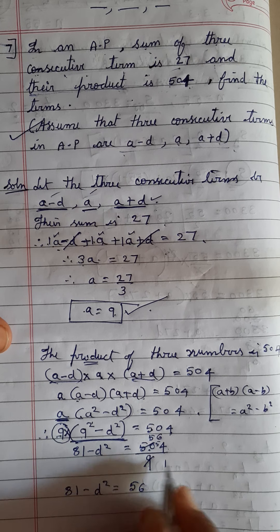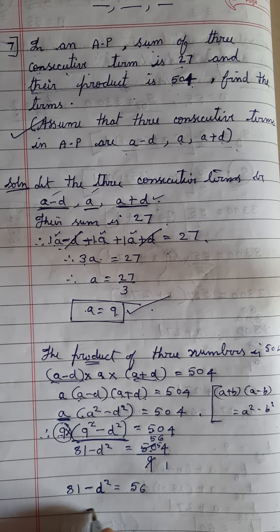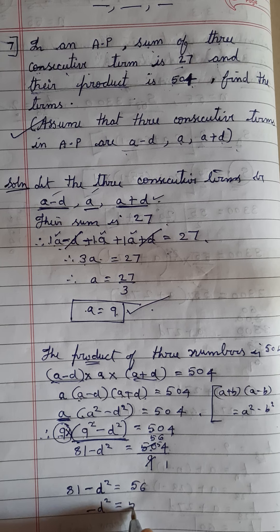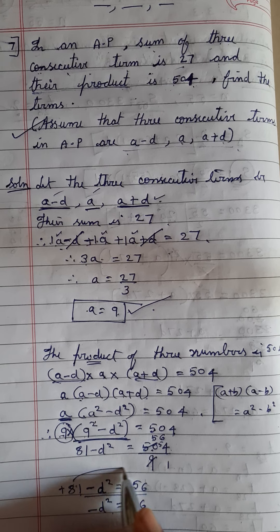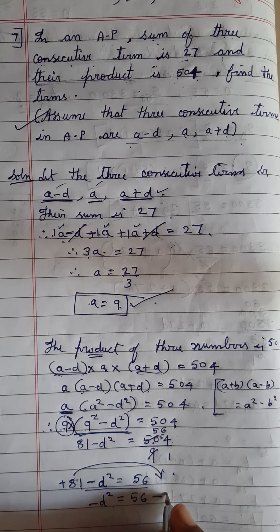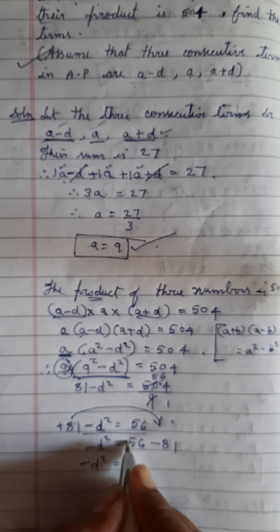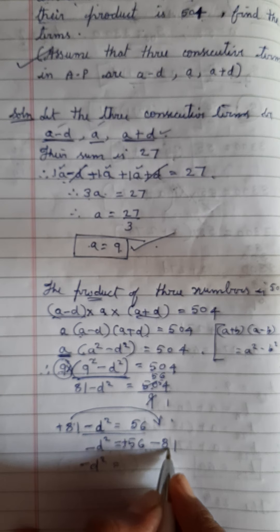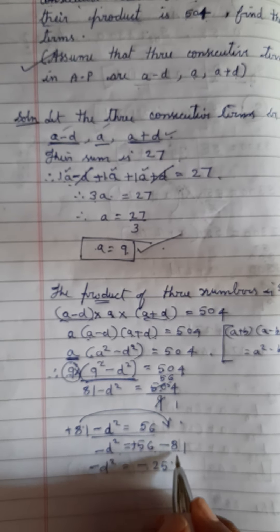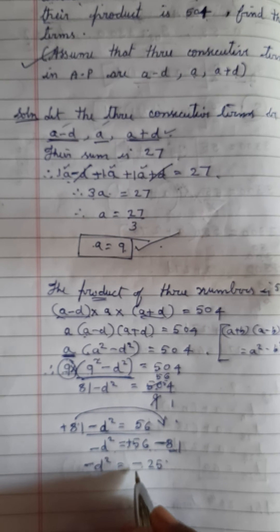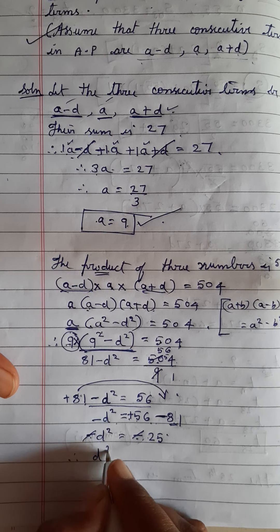So: 81 - d² = 56. Rearranging: -d² = 56 - 81 = -25. Since both sides are negative, they cancel, giving d² = 25.